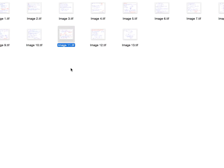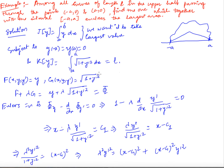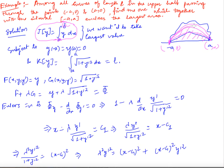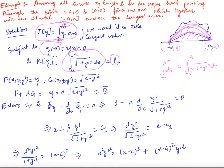Now let us look at an example — the classic isoperimetric problem. We have two points (-A, 0) and (A, 0) on the x-axis, a thread of length L, and we want to join these two points with a curve enclosing maximum area. The functional to maximize is ∫₋ₐᴬ y dx (the area), subject to the constraint that the arc length ∫₋ₐᴬ √(1 + y'²) dx = L, with boundary conditions y(-A) = 0 and y(A) = 0.